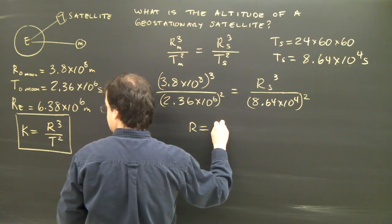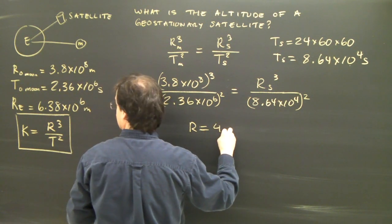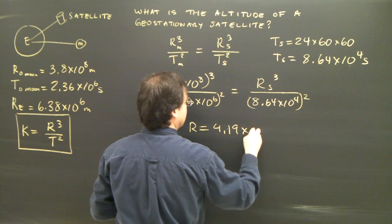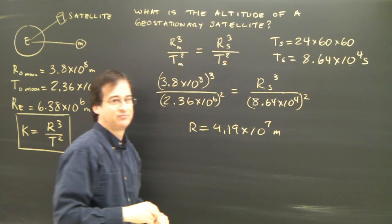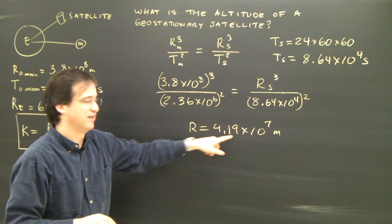But in the end, the radius of orbit is 4.19 times 10 to the 7 meters. So rearrange this, solve for it. That's what you get.